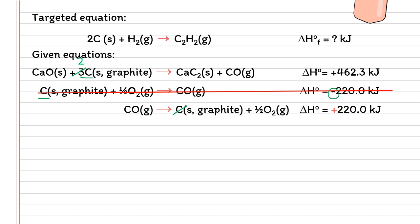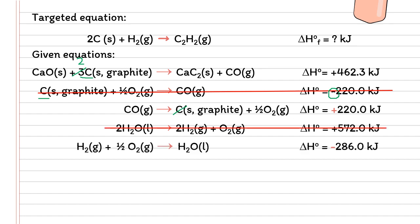Next, let's look at hydrogen gas. We have a thermochemical equation with hydrogen gas with a coefficient of 2 on the right-hand side. On our targeted equation, we want only 1 mole of hydrogen gas on the left-hand side. So we need to reverse the equation and also divide by 2. Once we do these modifications, we get H2 gas with a different sign and a value that is half of 572. We have now secured our 2C and also H2.